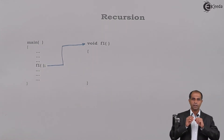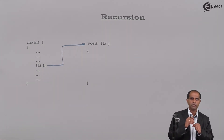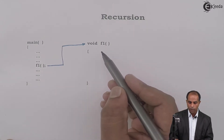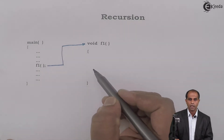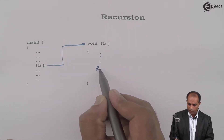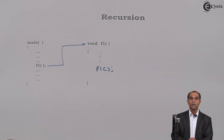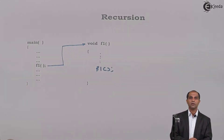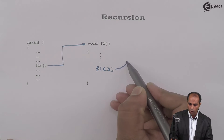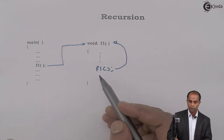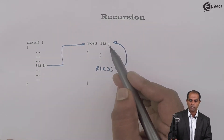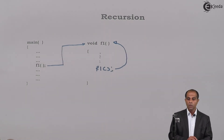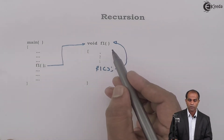This is the traditional way of using functions. Now let's try something new: main gives a call to f1, but rather than f1 doing a task and coming back, somewhere in the middle, f1 gives a call to a function called f1 one more time. When a function gives a call to itself, we call this function a recursive function.